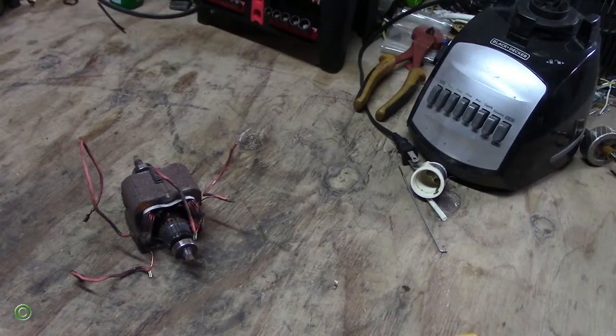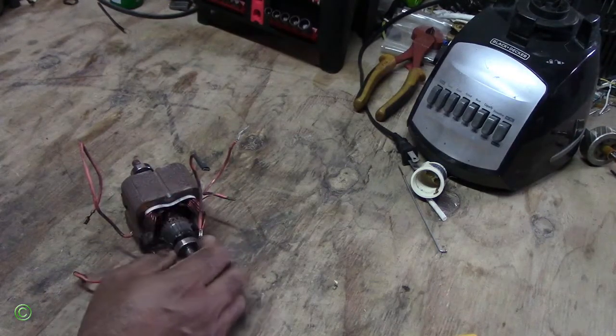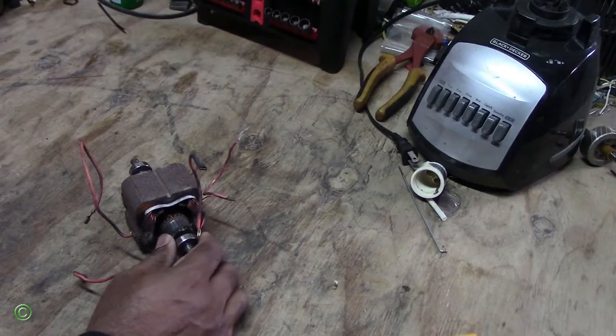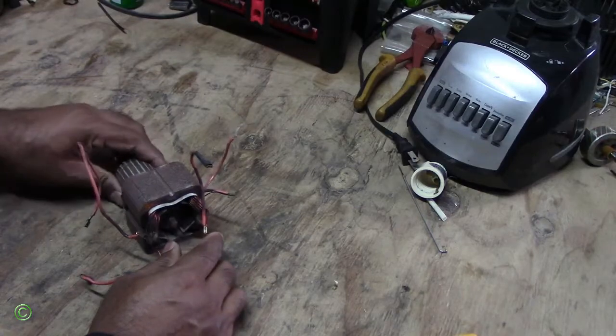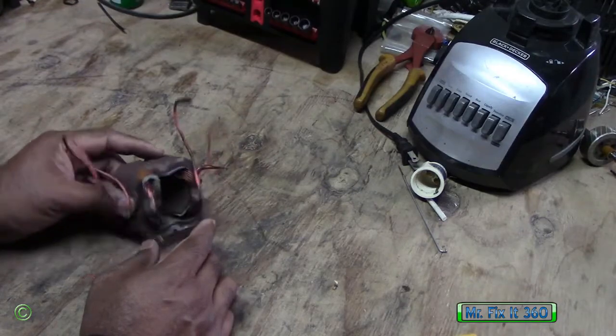Today I'll be showing you how to check for continuity on this motor. This motor came out from a vacuum cleaner. I've taken out the armature on this side.